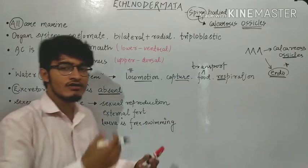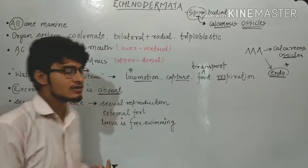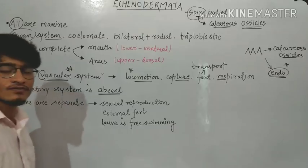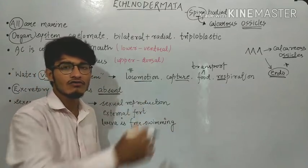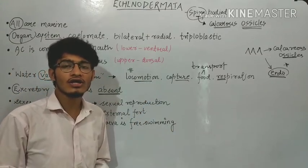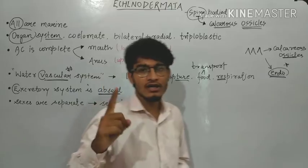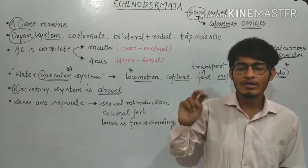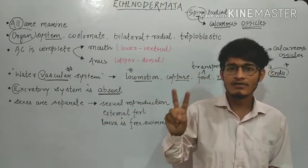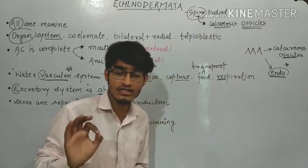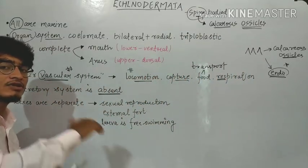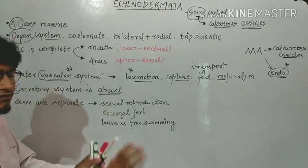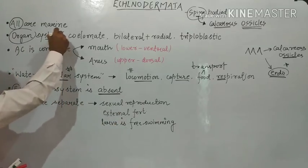There are some points we know well and just have to revise. There is organ system level of organization. After Platyhelminthes, all animals have organ system level. Porifera has cell aggregate level, Coelenterata and Ctenophora have tissue level, Platyhelminthes have organ level, and after Platyhelminthes all animals have organ system level of organization.